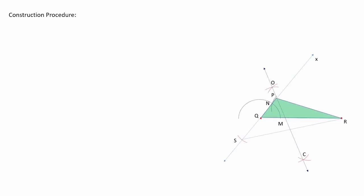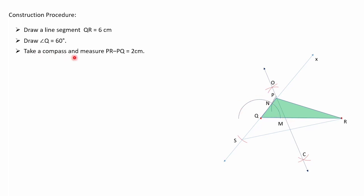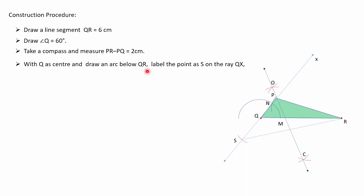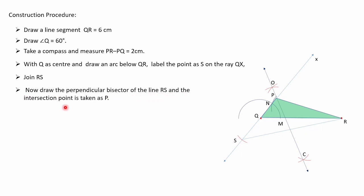Written construction procedure for question three: Step one — draw line segment QR of 6 cm. Step two — draw angle Q equal to 60 degrees using ruler and compass. Step three — take 2 cm in the compass; with Q as center, draw an arc below QR and label point S on line QX. Step four — join R and S. Step five — draw the perpendicular bisector of RS; label it OC, and the intersection point is P. Step six — join PR. Triangle PQR is the required triangle.